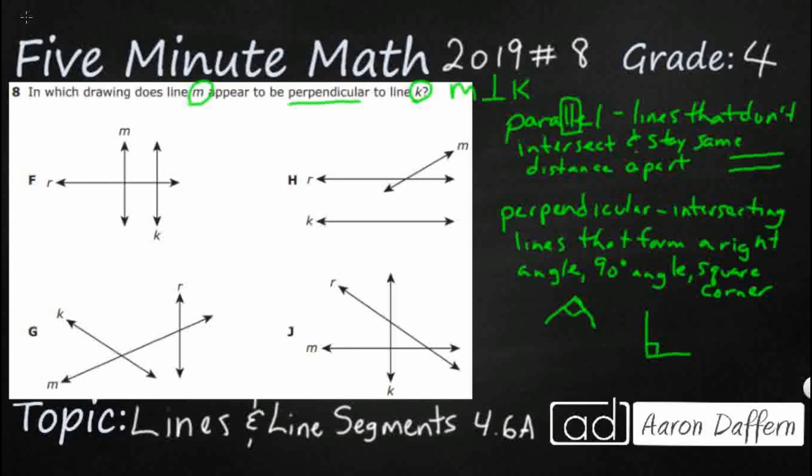So we're looking for line M and line K. Let's take a look at F. You've got line M right here and line K right here. Well, they don't intersect - it looks like they are the same distance apart.